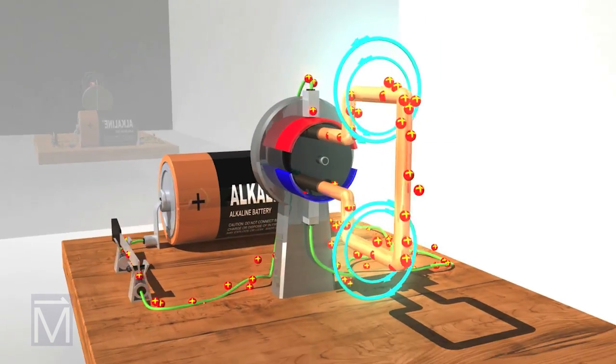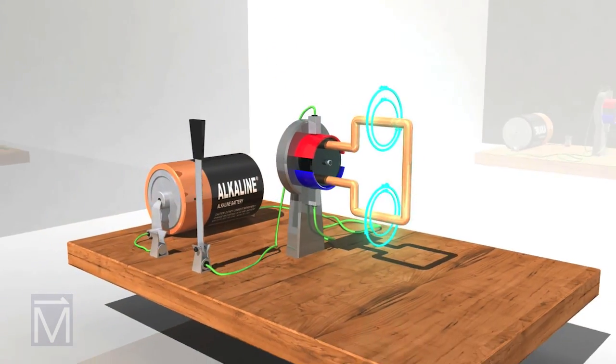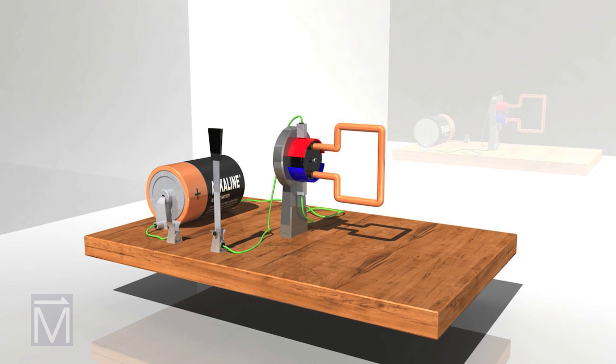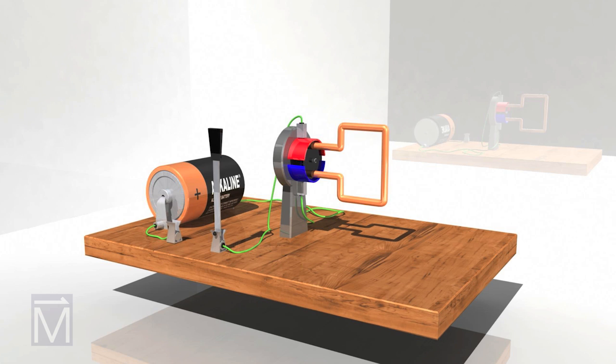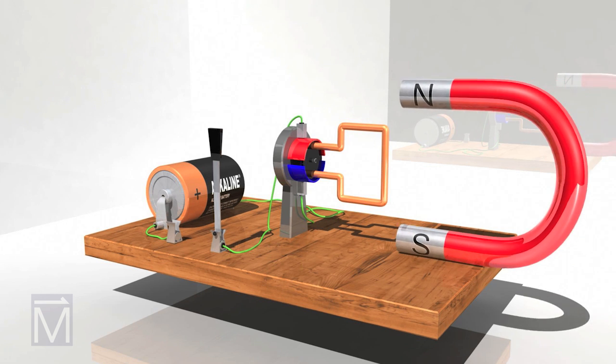This isn't much of a motor yet, though. An important piece, an external magnetic field, is missing. In our demonstration, this horseshoe magnet will provide that field, as shown by these blue lines. We position the horseshoe magnet so that the rotor is right in the middle of the magnet's field.